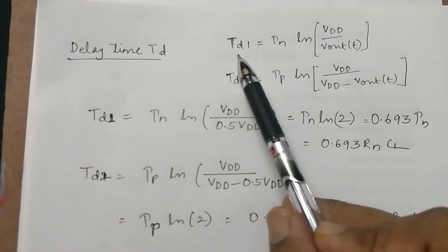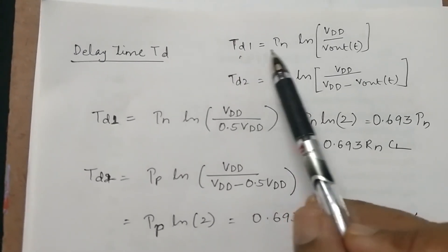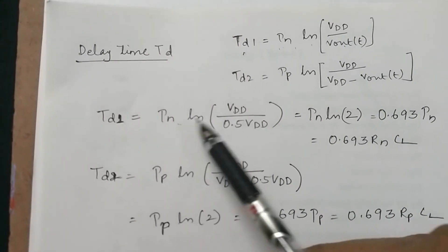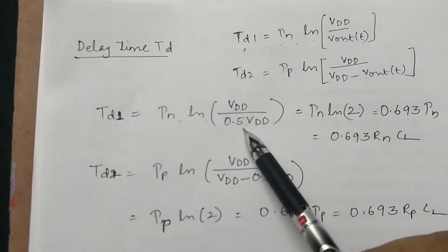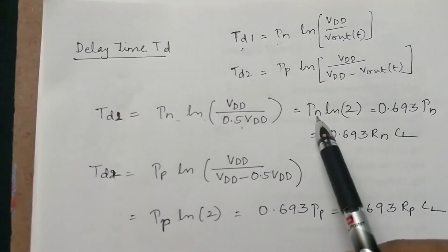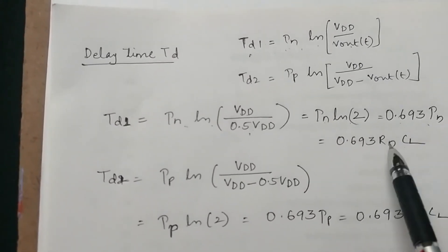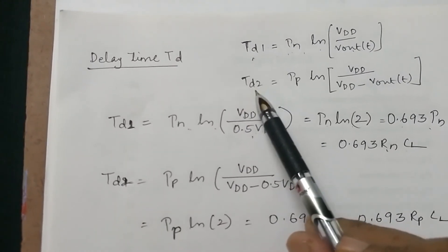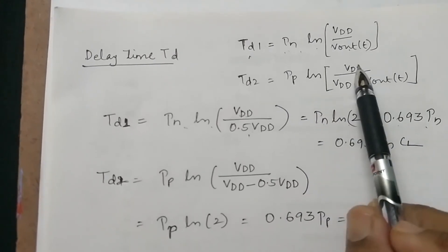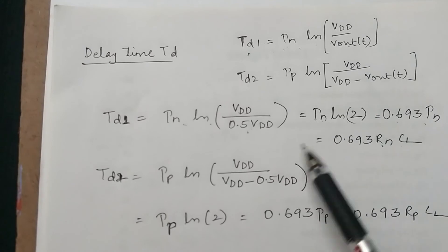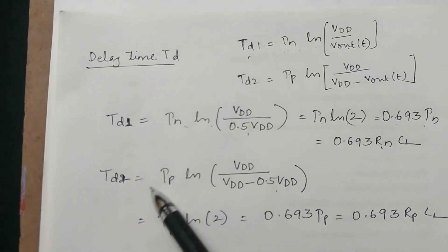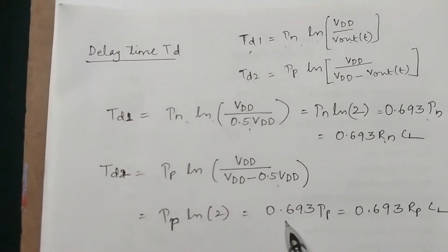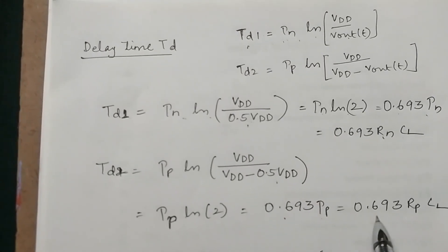For td1 (NMOS discharging), substituting Vout = 0.5·VDD into t = τn·ln(VDD/Vout): td1 = τn·ln(2) = 0.693·τn = 0.693·Rn·CL. For td2 (PMOS charging), substituting Vout = 0.5·VDD into T = τP·ln(VDD/(VDD − Vout)): td2 = τP·ln(2) = 0.693·τP = 0.693·RP·CL.